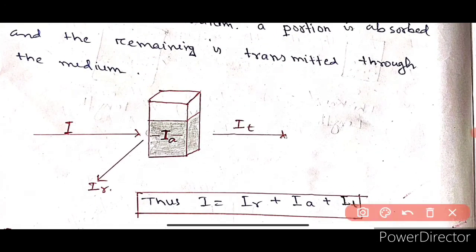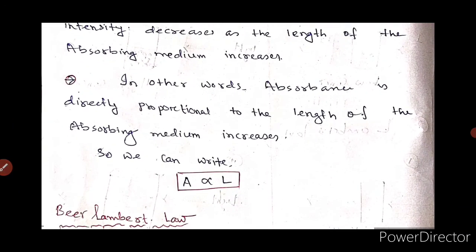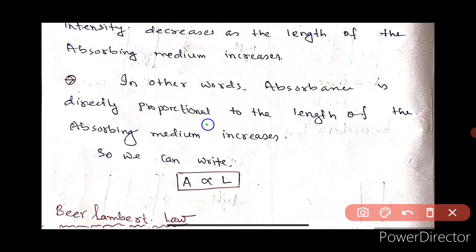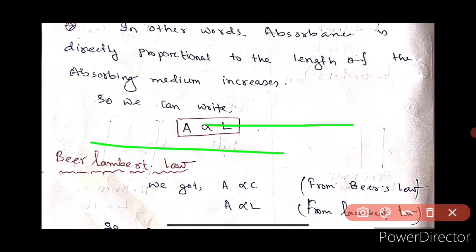This is the diagram. If the thickness increases, then the absorbance increases. If the absorbance increases, then the intensity of the light decreases. So we can write A proportional to L.